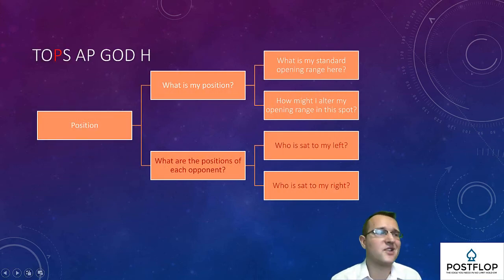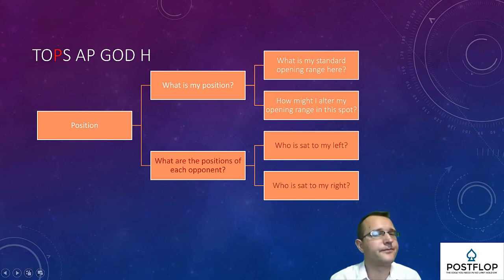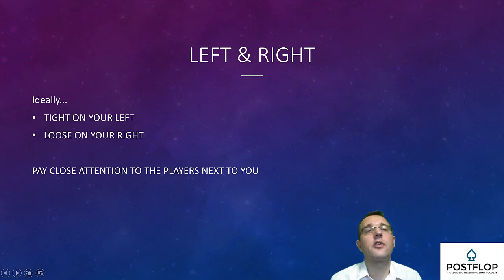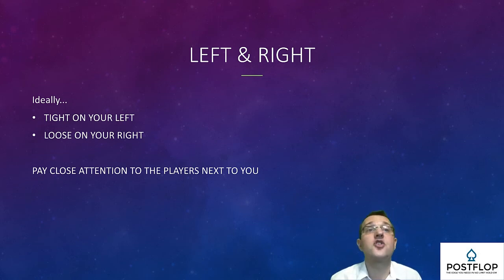It's worth noting the positions of your opponents — this doesn't need to take long. In tournaments, note where the chip leader is sat and any short stacks. The player to your immediate right you will have position on most of the time — ideally he will be a loose fish and you'll be ideally positioned to exploit him. On your left you would prefer a tight player so you can get away with stealing more often. In cash games it can sometimes be a good idea to find another table if conditions don't suit you. Either way, pay attention to the two players right next to you.